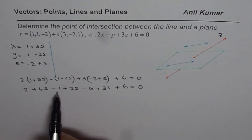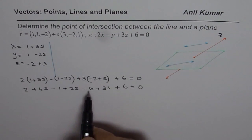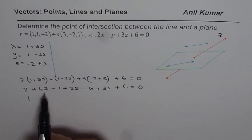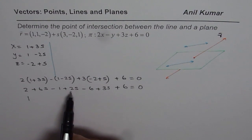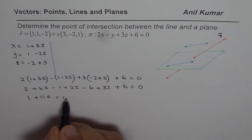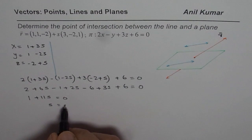So, 2 plus 6S minus 1 plus 2S minus 6 plus 3S plus 6 equals to 0. Constants are 2 minus 1, 1 and minus 6 minus 6. So we are left with just one here. So, we have here variables 6S, 2S, 8S and 3, 11S. So, 11S plus 1 equals to 0. From here, we can calculate S is equals to minus 1 over 11.